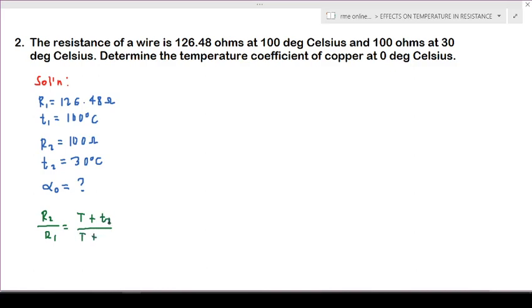R2 over R1 is equal to T plus t2 over T plus t1. So we have all the given: t1, t2, R1, and R2, so we can solve for our T.